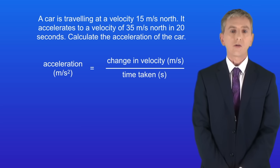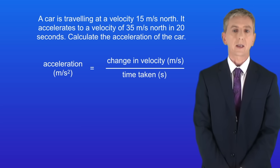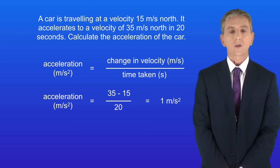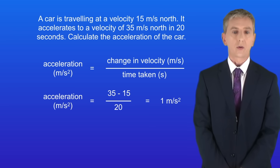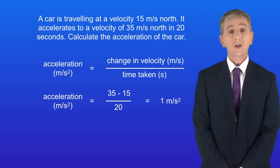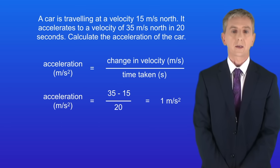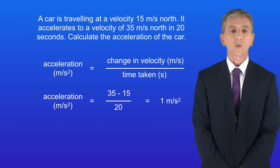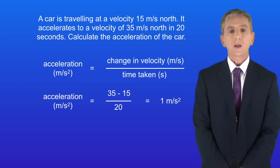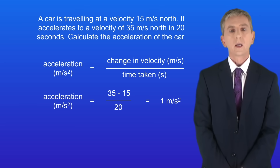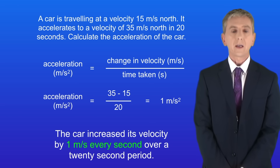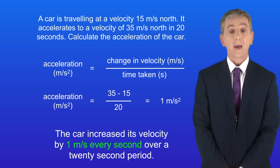To calculate acceleration we divide the change in velocity by the time taken. The final velocity was 35 meters per second north and the start velocity was 15 meters per second north. So the change in velocity is 35 minus 15, giving us a value of 20 meters per second. The time taken was 20 seconds, giving us an acceleration of 1 meter per second squared. This means the car increased its velocity by 1 meter per second every second over a 20 second period.